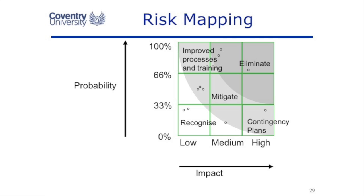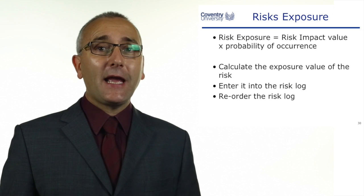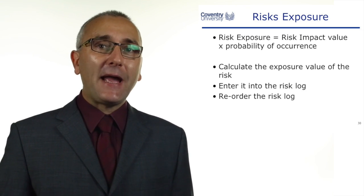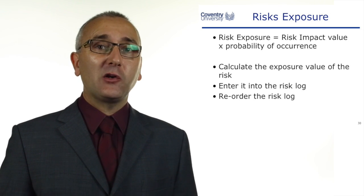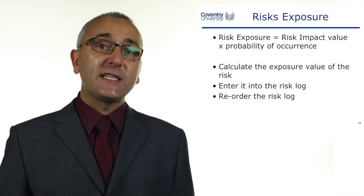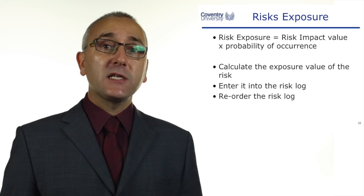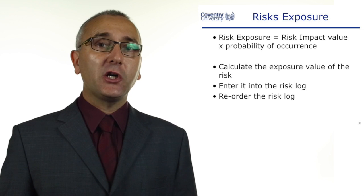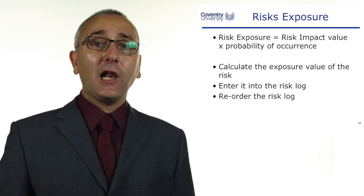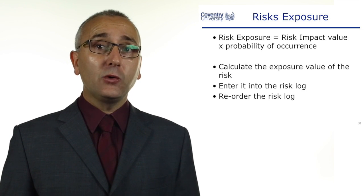Consider a supplier delivering late. We can work out the impact — say it's two days late, or it'll cost £10,000 to air freight the goods. But what's the probability of that supplier delivering late? If he's never delivered late before, that doesn't guarantee he won't be late this time. We need to calculate which are the biggest risks by calculating the risk exposure — we multiply the impact value of the risk by the probability of its occurrence. This gives us an order for our risks, which is why it's a good idea to have a sortable risk log with the highest exposure risks at the top.